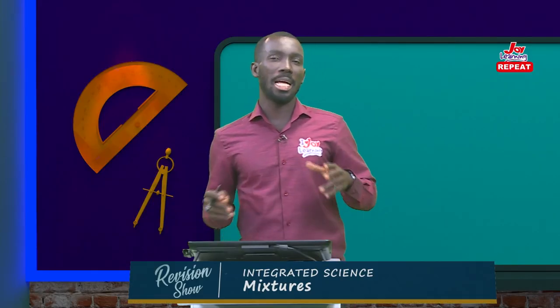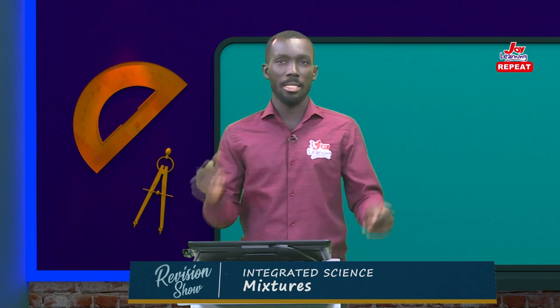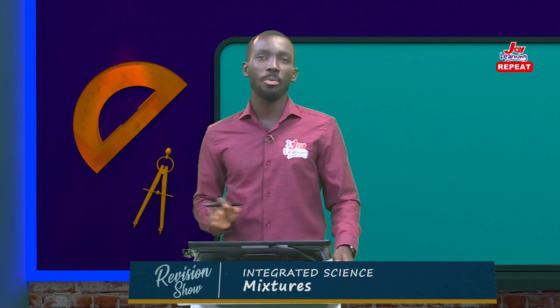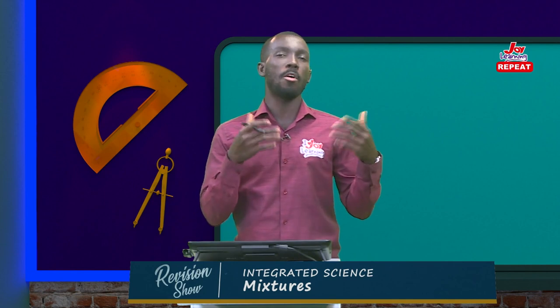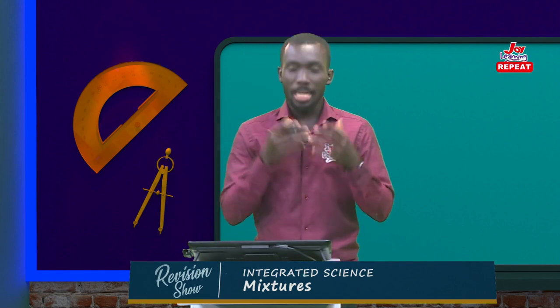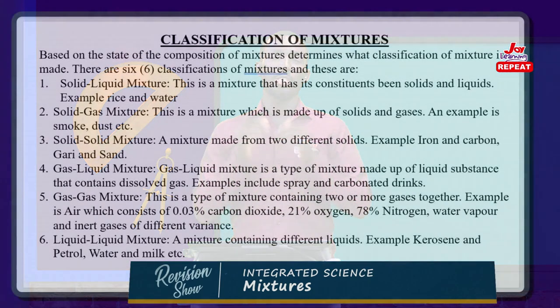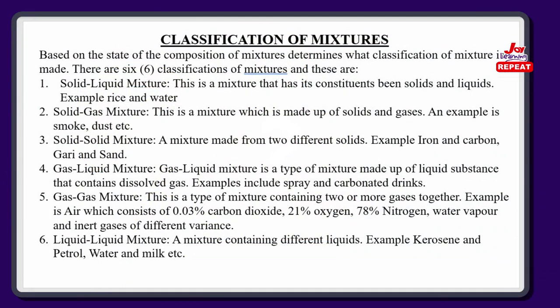Now, how do we classify mixtures? Mixtures are classified under six different headings and I will go through all of them to show what types of substances form what kinds of mixtures. The first one is solid-liquid mixture. Whenever you hear solid-liquid mixture, the clue is in the name: the components come from something solid and something liquid. When the two are brought together, it gives you what is called a solid-liquid mixture — a mixture whose constituents are solids and liquids.